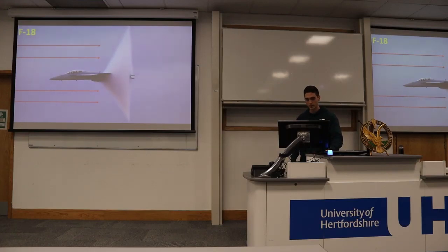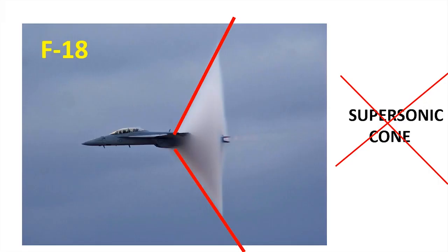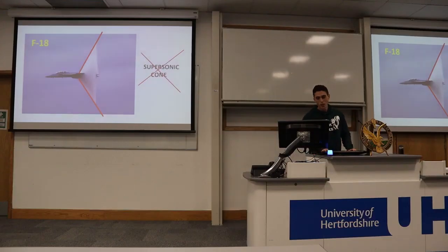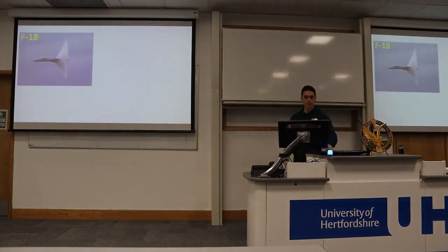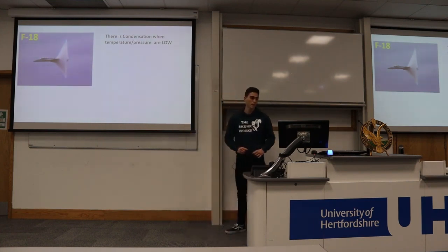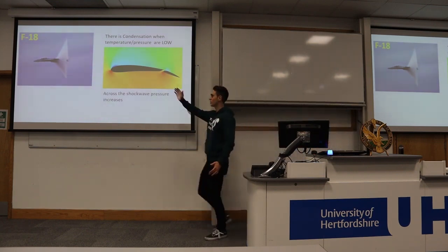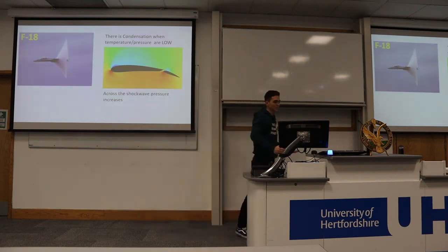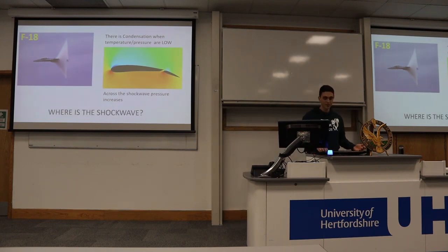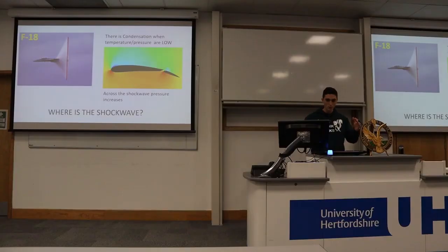Here we have the F-18 Super Hornet, and here we have what appears to be the supersonic cone. But no — it is not the supersonic cone. This is the third misconception and it is so, so important. Why do I know this is not the supersonic cone? Because we know that condensation appears when pressure and temperature are low, like on the upper part of the wing. But we also know that across the shockwave, pressure increases. So how in the world could it be a shockwave? The answer is — it's not a shockwave. So where is the shockwave? Just there, where condensation is disappearing suddenly, because across the shockwave temperature is increasing and therefore condensation disappears.